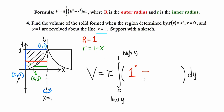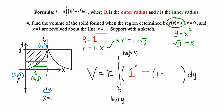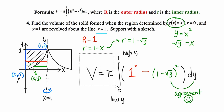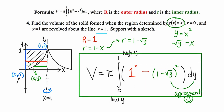There's a problem: putting 1 minus x in a dy problem creates a variable conflict — all variables should be y, not x. So I take the function y equals x squared and take the square root of both sides, giving the square root of y equals x. Instead of thinking of the inner radius as 1 minus x, little r becomes 1 minus root y. Plugging that in — 1 minus root y, quantity squared — we have agreement in variables. This is the expression for the volume when the region is rotated about x equals 1, our one example of a dy problem.